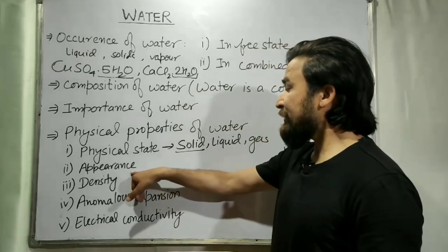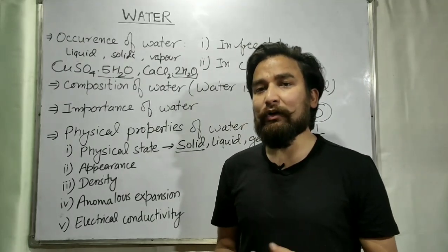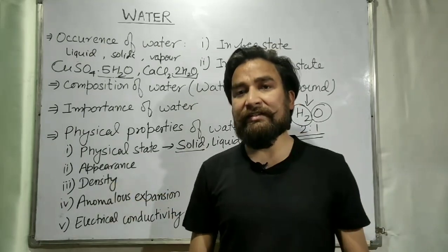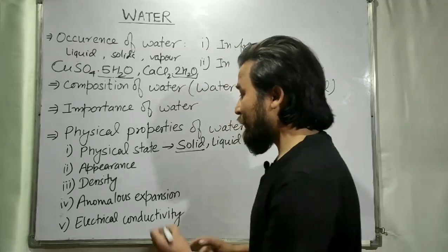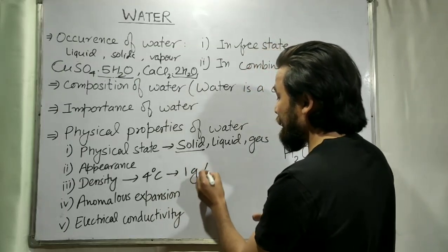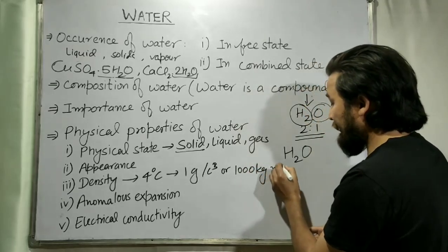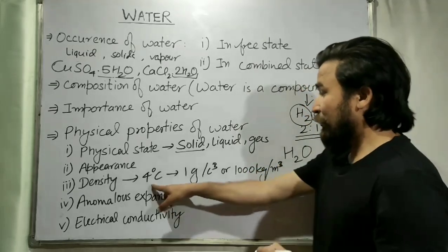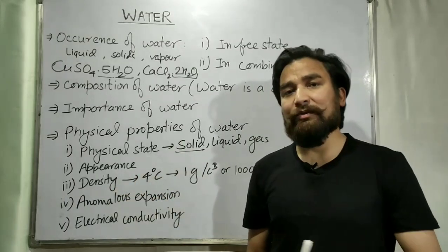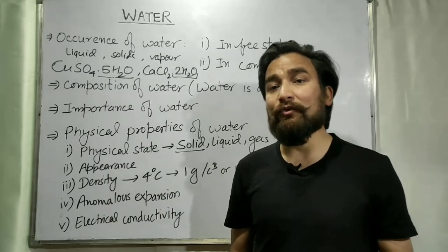The next property is the appearance of water. Water is a colorless, odorless, and tasteless substance. The next is the density of water. The density of water is highest at 4°C, which is 1 gram per centimeter cube or 1000 kg per meter cube. Above 4°C the density of water decreases, and below 4°C the density of water also decreases. So the density of water is highest at 4°C.